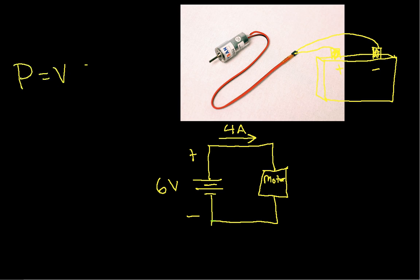Well, I have power is voltage times current, and again, this is the power dissipated by the motor. The current going into the motor goes from a higher potential to a lower potential. So this is going to be 6 volts, that's the voltage across the motor, times 4 amps, which is 24 watts. So this motor is dissipating 24 watts.